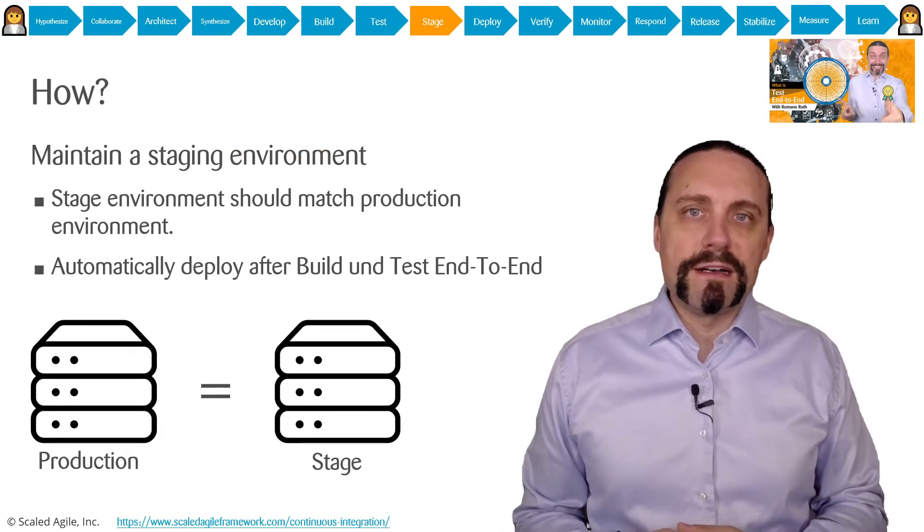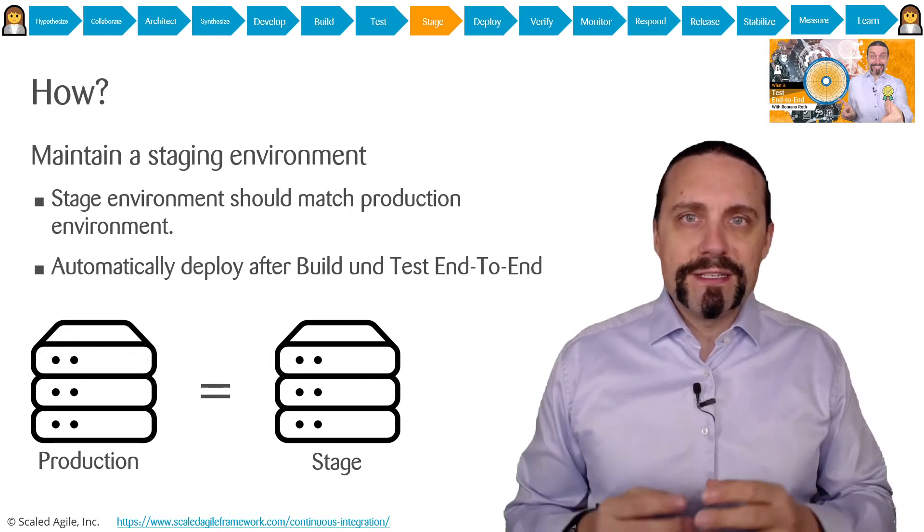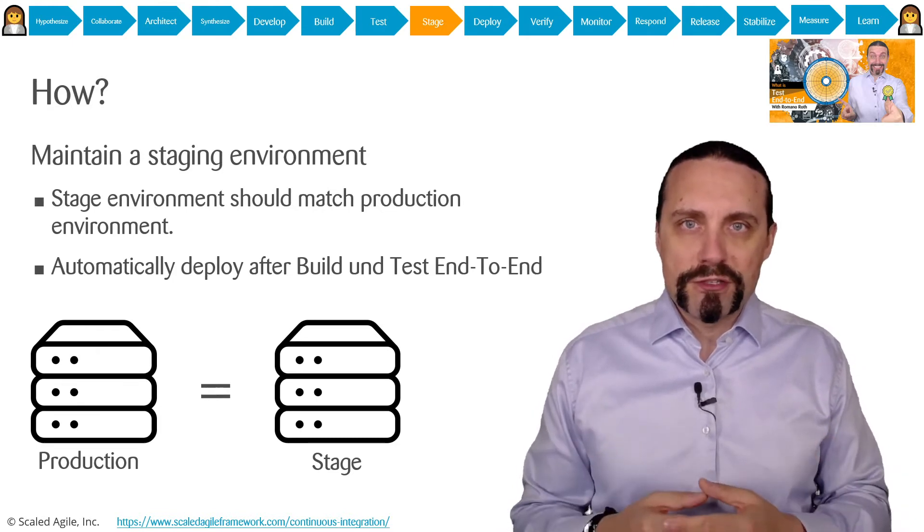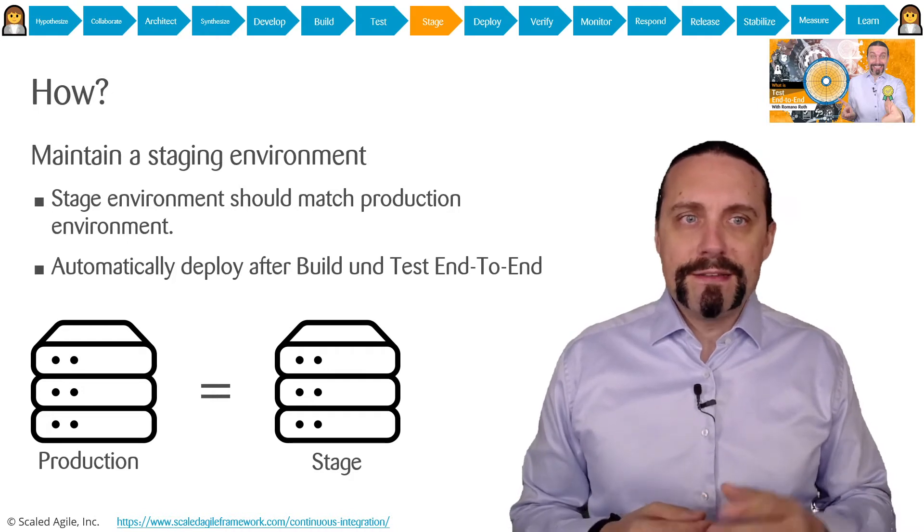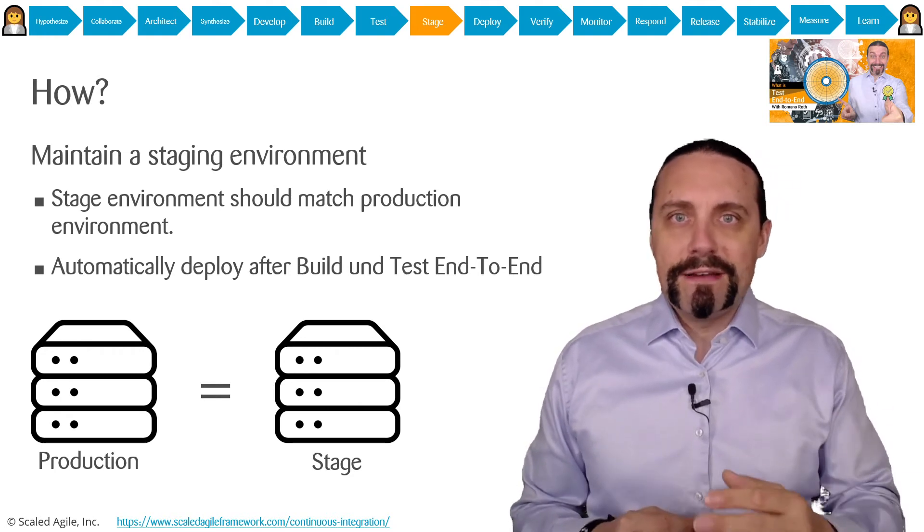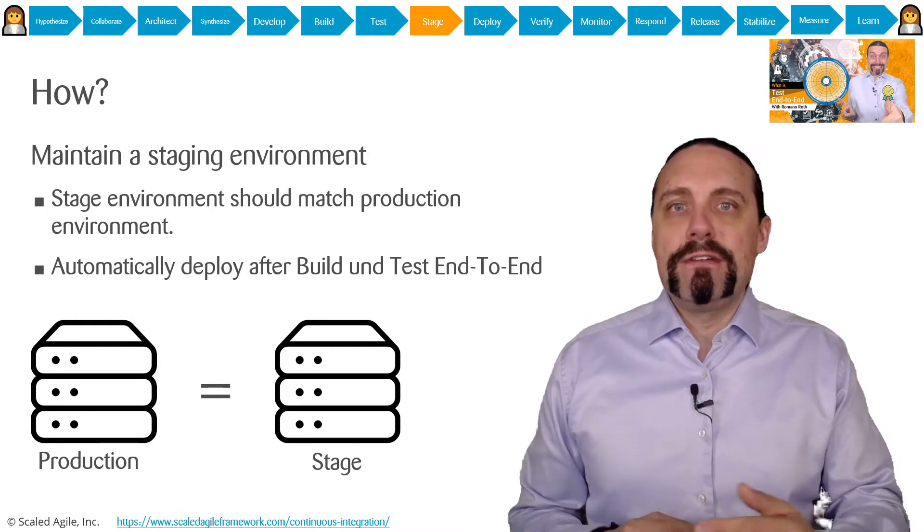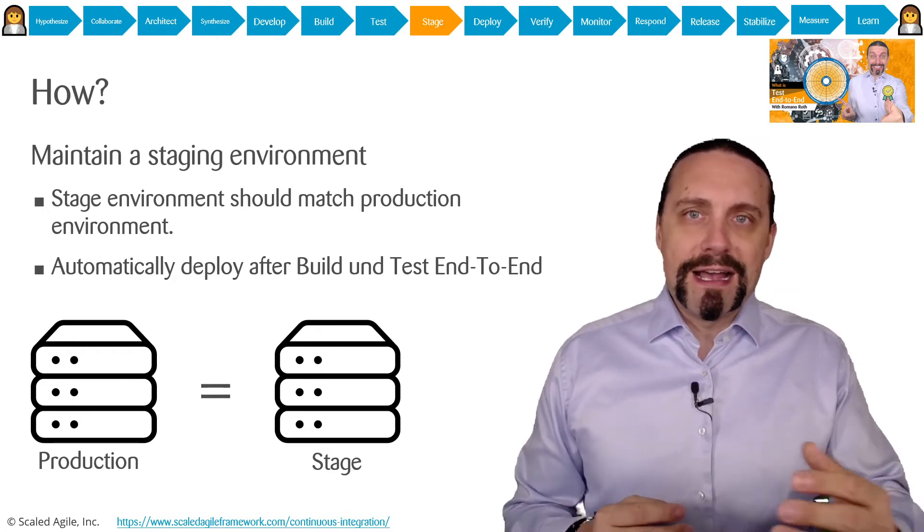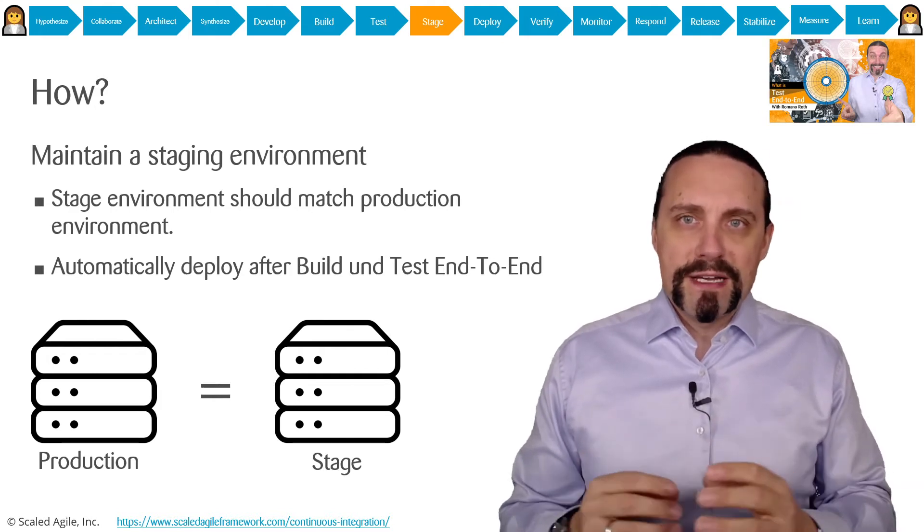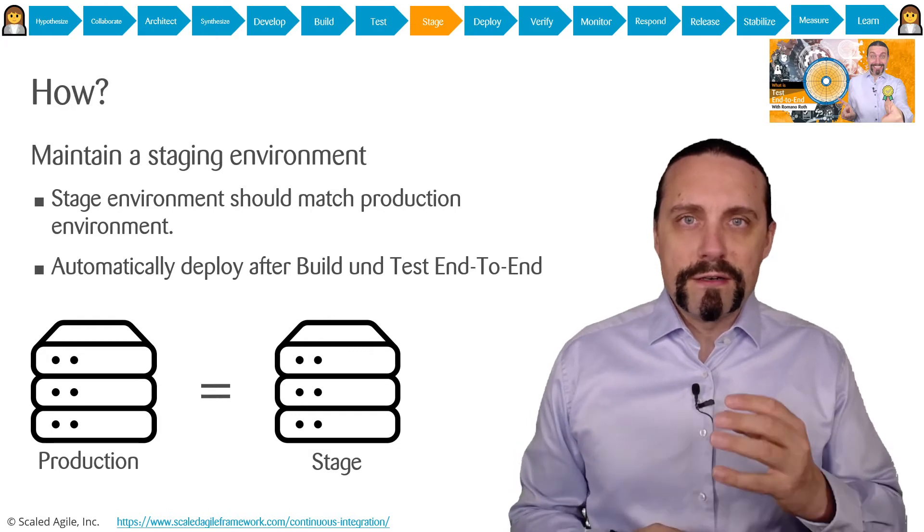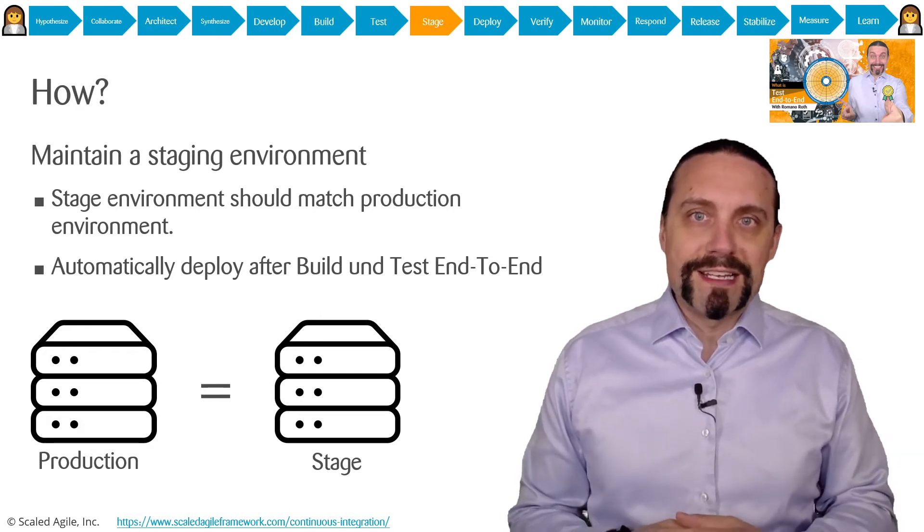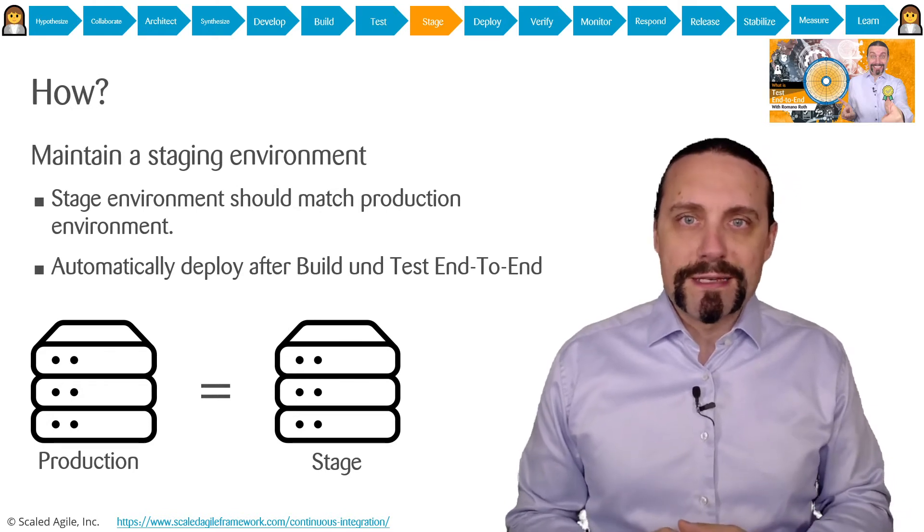To do this we need to have a stage environment. The definition of a stage environment is that it matches the production environment. So it is a one-to-one copy of the production environment. We already discussed that in the test end-to-end. There we had test environments and we said the test environment should be as near as possible to the production environment. But here in stage we now really need to have this matching of the production environment. With that we are really able to test end-to-end our software in a production-like environment so that we are able to do the user acceptance testing there.